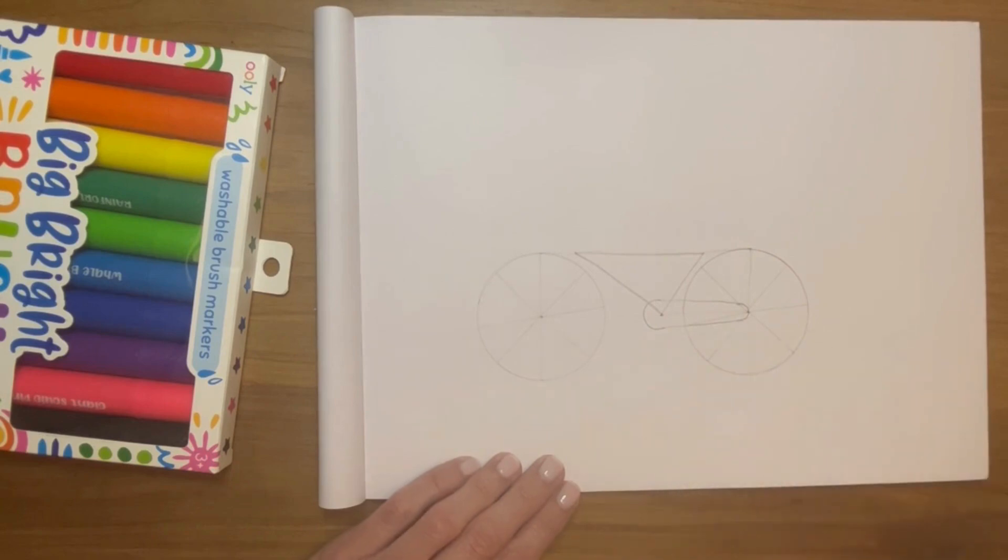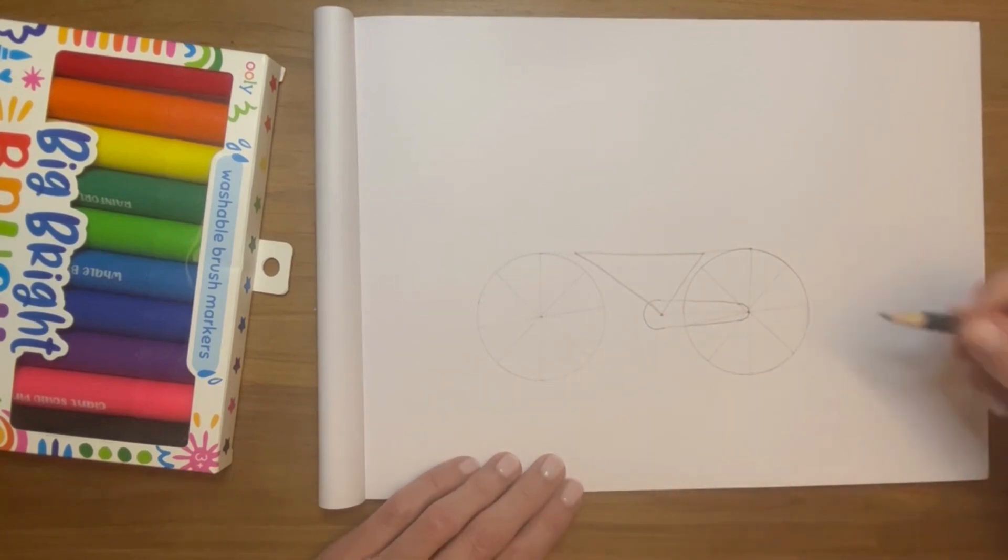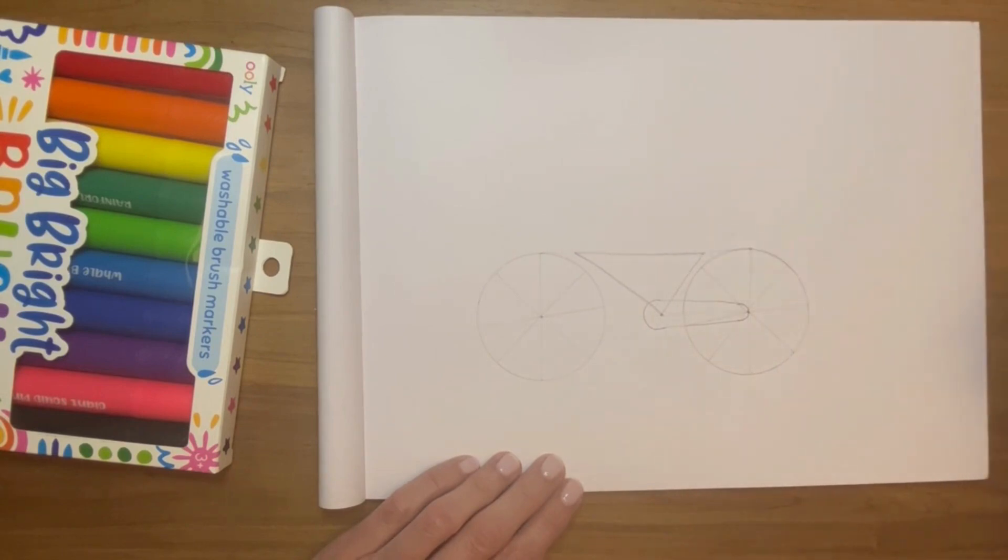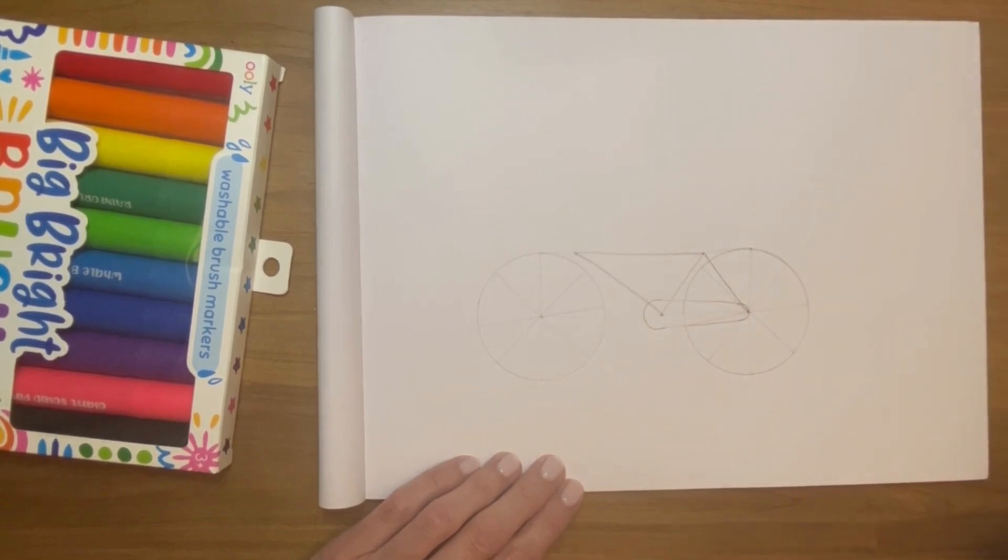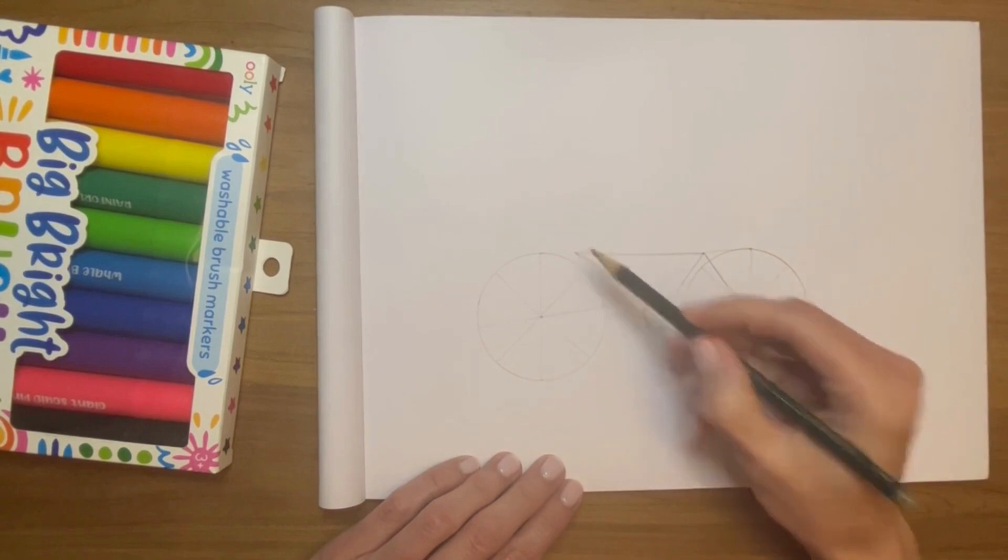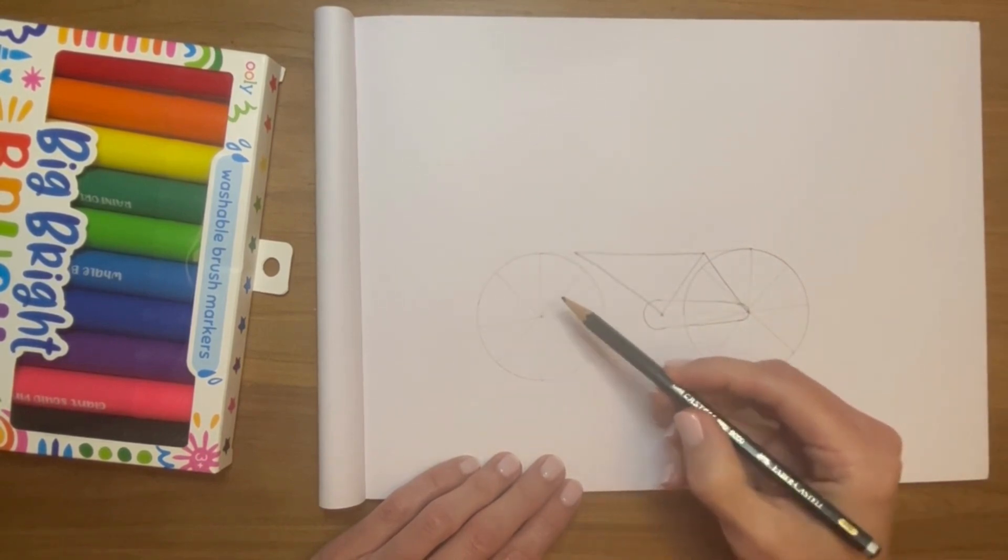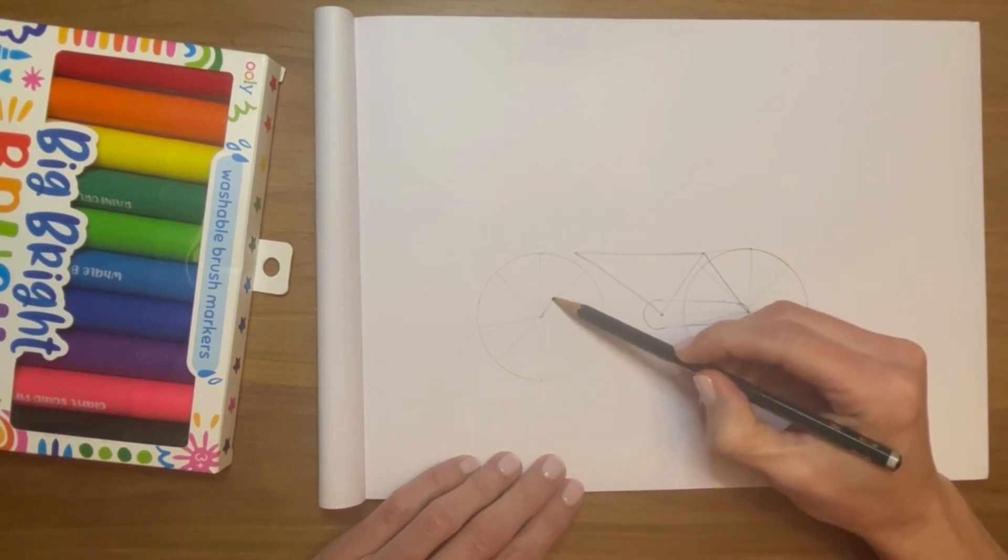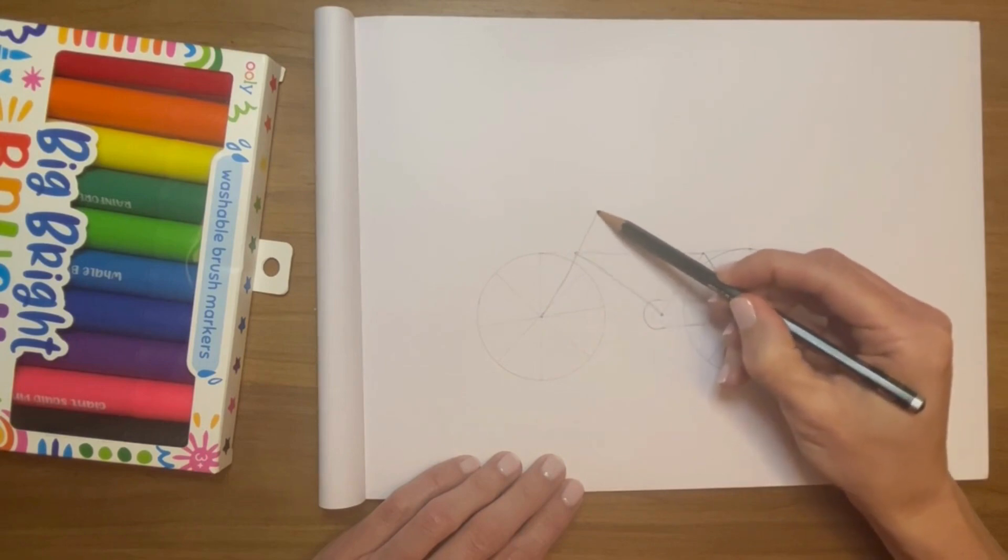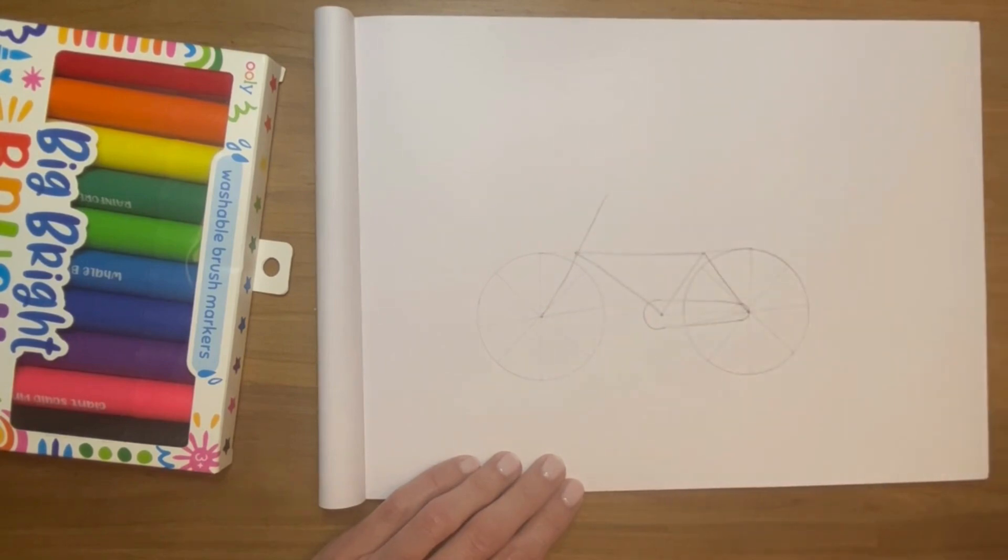Now we're going to join the top of this C with the top of the little C, and the bottom of this one to the bottom of the other one. All right, now we're going to make a line from this angle of the triangle to the middle of the wheel again. And from this angle of the triangle to the middle of this one, except this time we're going to start at the wheel, go past the angle, and make it a little bigger.